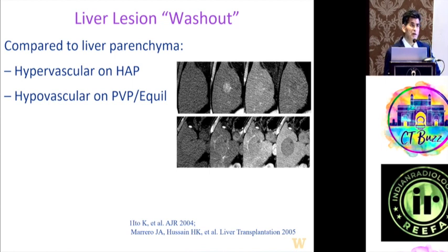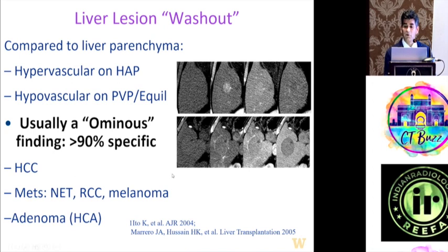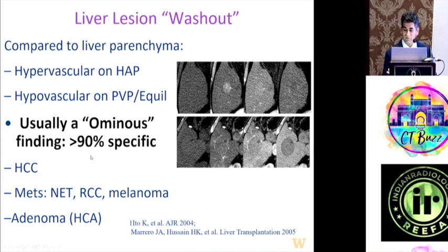For HCC, the diagnostic criteria don't rely on arterial phase alone — washout is equally important. Many benign lesions such as adenomas, FNHs, and shunts will enhance in arterial phase but will not wash out. Washout means the lesion turns darker than background in the venous phase, while simple de-enhancement means lighter than arterial phase. Washout has more than 90% specificity for HCC and is linked to angiogenesis and vascular leakiness.